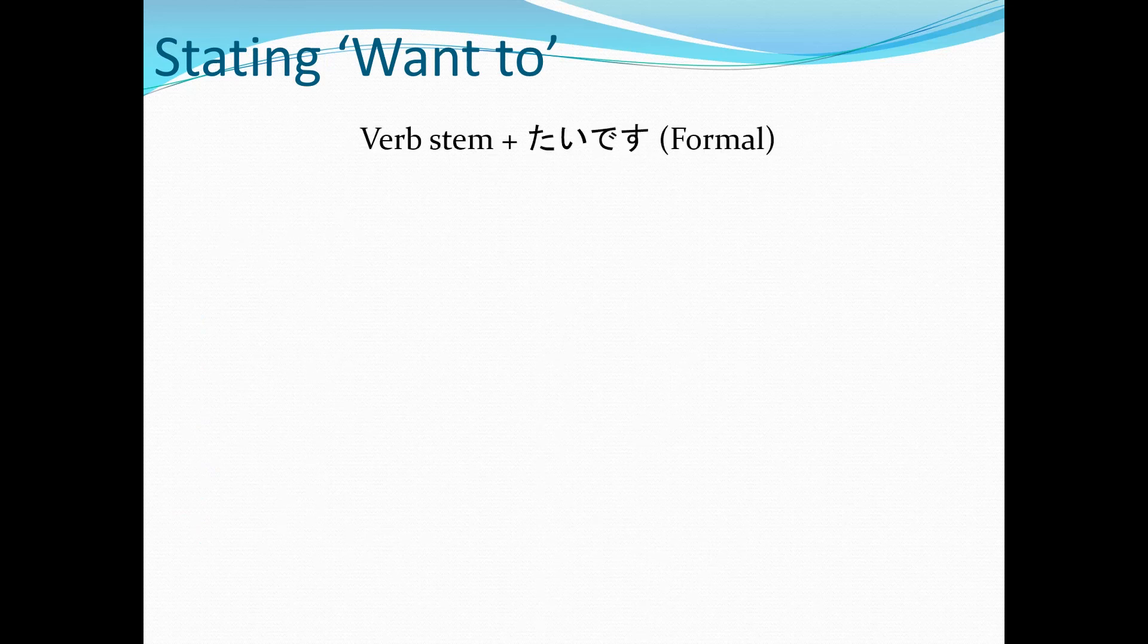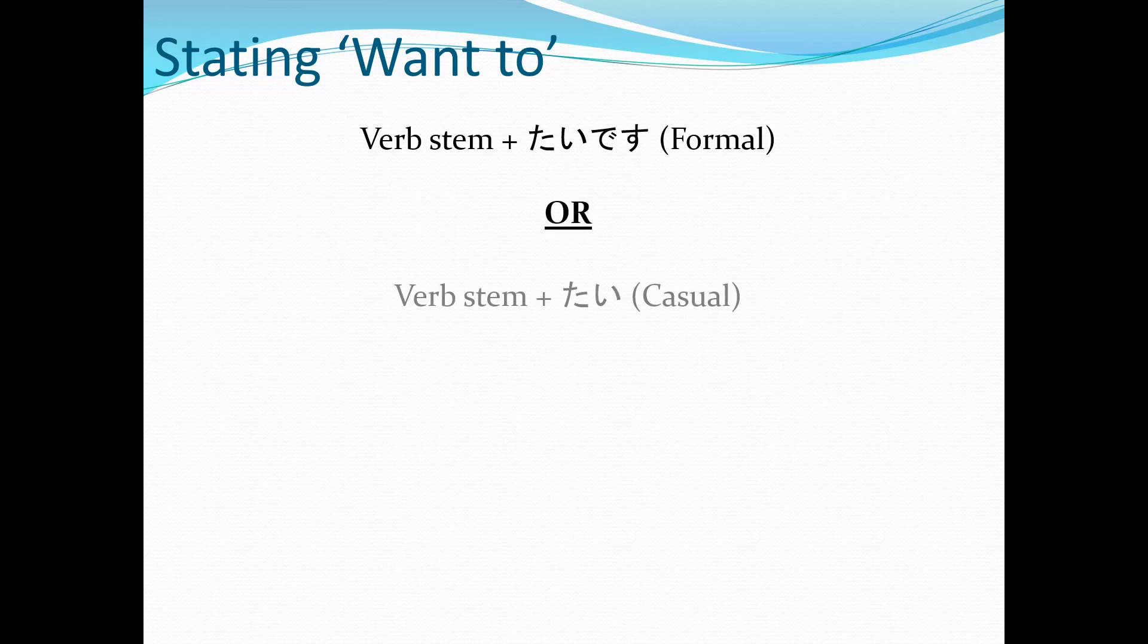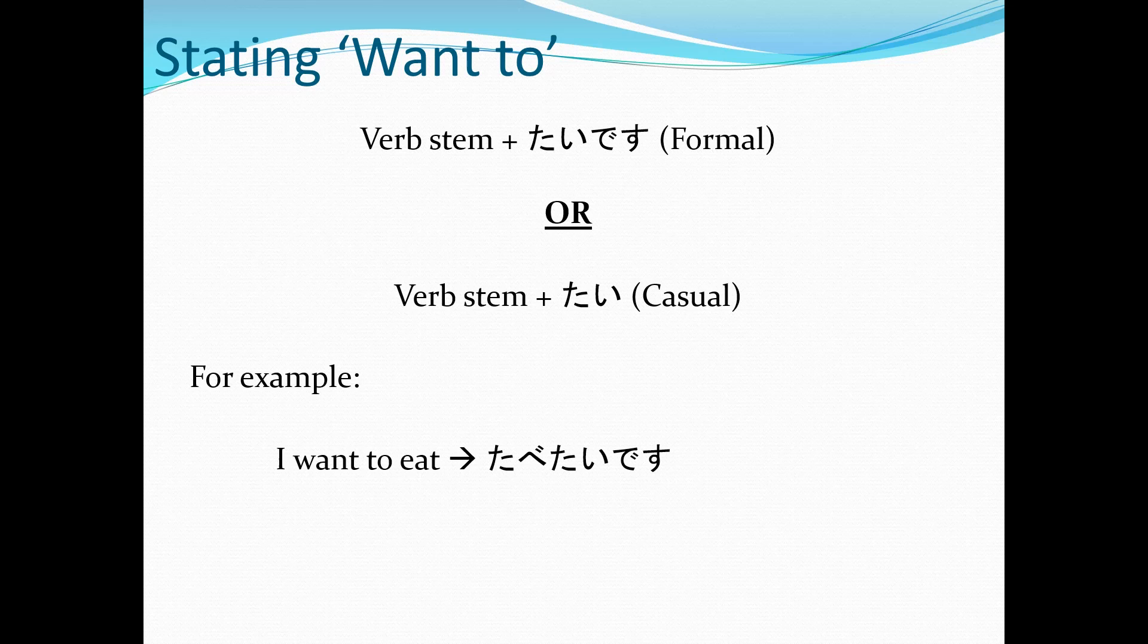How do you say want? It's pretty simple. Verb stem plus たいです—that's in a formal setting. Or verb stem plus たい—that's if it's casual. Want to eat? 食べたいです. That's a formal situation. I want to drink? 飲みたい. That's with your mates.